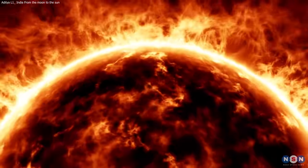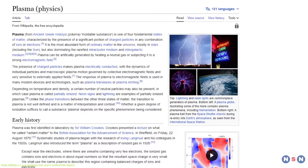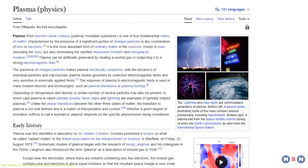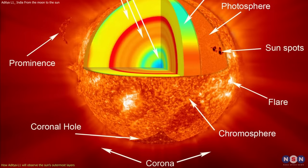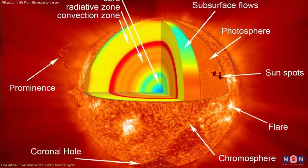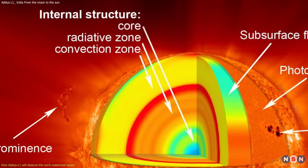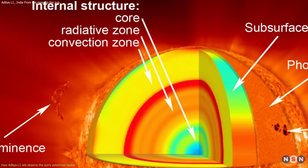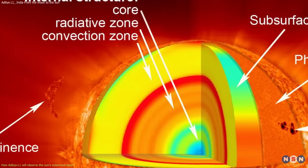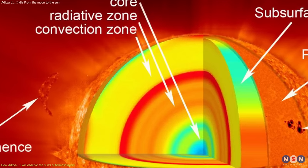Our Sun is a huge ball of plasma, which is a state of matter that is like a gas but with electrically charged particles. It has several layers, each with different properties and behaviors. The innermost layer is the core, where nuclear fusion occurs and produces energy. The energy then travels through the radiative zone and the convective zone, where it is transferred by radiation and convection respectively.